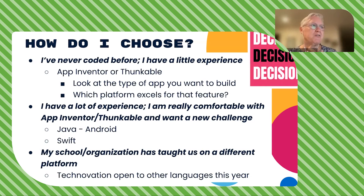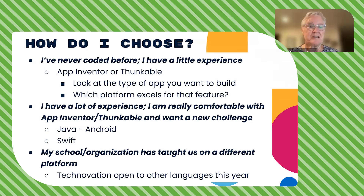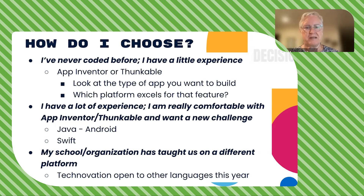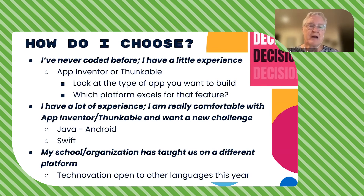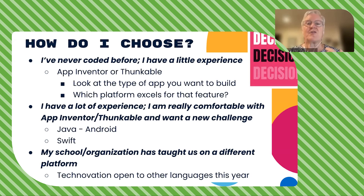So how do you choose if you're not sure what you want to do? If you've never coded before and this is your first time participating in Technovation, I would say choose either App Inventor or Funkable. Weigh up the kind of app you're thinking of building and what features it will need, then decide which platform fits those features. Also, just go in and play with it — see if you're comfortable with it. Generally, with either one you'll be able to grasp it quickly enough to create your Technovation project app.